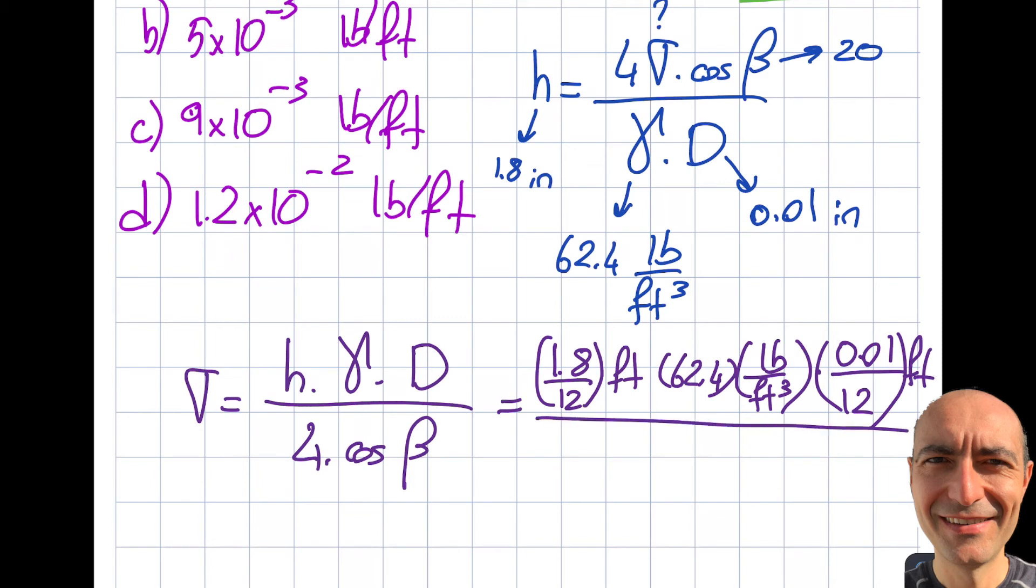Divided by 4 times cosine of that angle 20. And let's see what cancels over here. You can see feet, it becomes square, but then there's another one so it's pound per foot. So I'm good. I'm matching to what the answer is asking me to find.